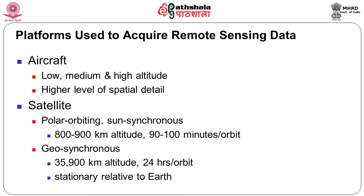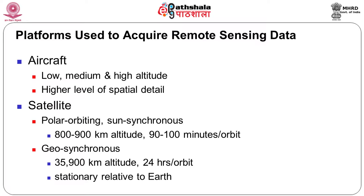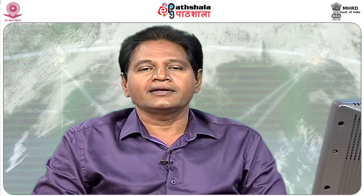Next we talk about satellites. There are two important types: polar orbiting satellites and geostationary satellites. As the name indicates, polar orbiting satellites are those which go around from one pole to another - from north pole to south pole around the earth's surface. The other type, geosynchronous satellites, synchronize with the speed of the earth and are always looking at a specific location. Whereas polar orbiting satellites go around the earth's surface, seeing various parts of the earth at a given time.